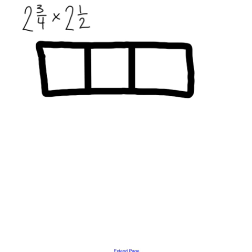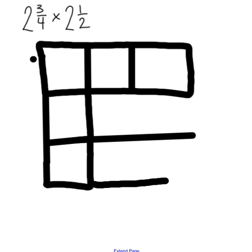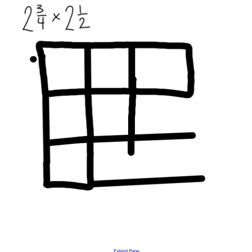Now think about how many boxes are needed to represent two and one-half. Three boxes are needed: two boxes for the whole number and one box for the fraction. They share the first box. Three boxes are drawn going down, then lines are continued across and down to make an array.